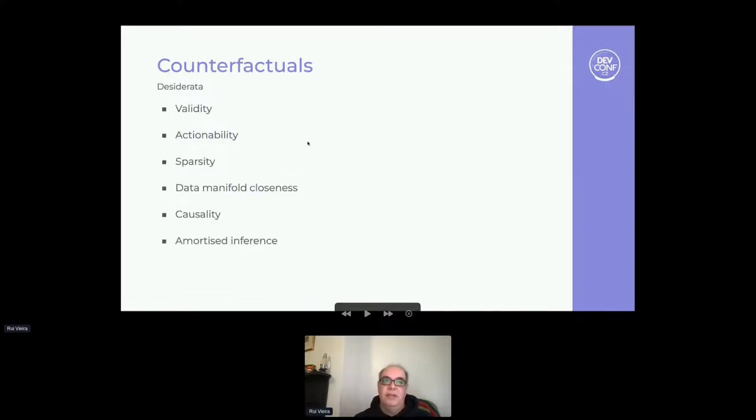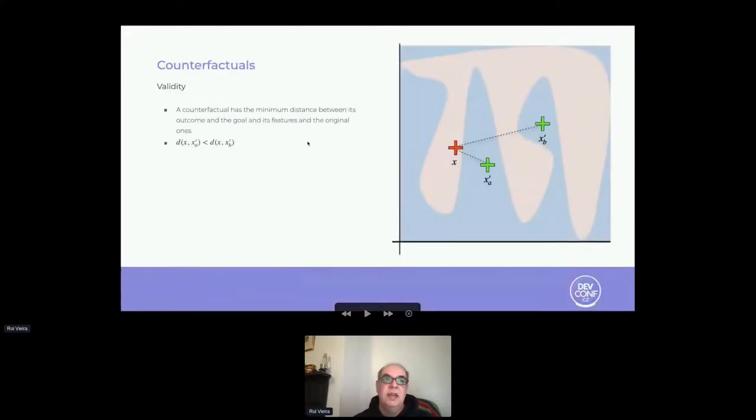Counterfactuals have a set of desired properties, and this is an active area of research. We'll focus on the most common ones: validity, actionability, and sparsity. The first property, validity, states that not just any solution that satisfies our desired outcome is a valid counterfactual. Let's say we look at this example where we have two possible solutions and both are valid, but one of them is much closer to the original inputs than the other one. The validity property says that we should minimize the distance between the original inputs and the counterfactual result inputs.